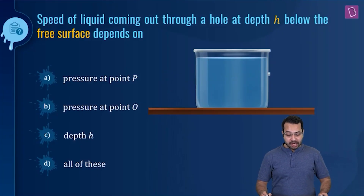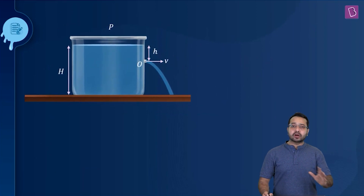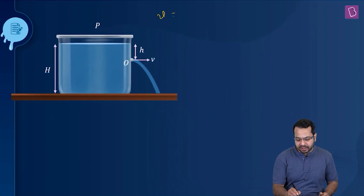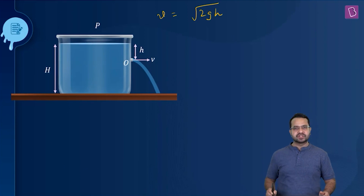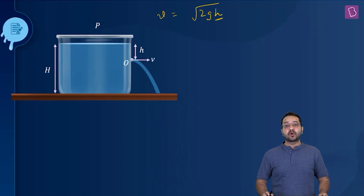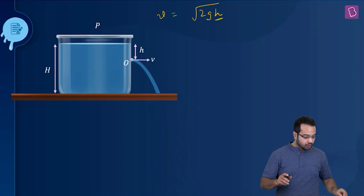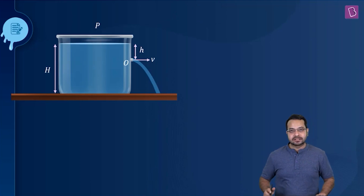The question is: the speed of liquid coming out through a hole at depth H below the free surface depends on — the options are pressure at point P, pressure at point O, depth H, or all of these. We are talking about speed of efflux, and the formula for speed of efflux is V equals under root of 2gH. From the formula we might think it only depends on H, but that would be a mistake if we don't know the assumptions behind the formula.